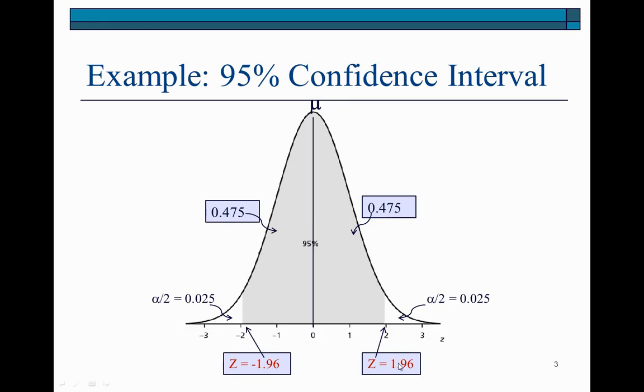So 1.96 is the z value corresponding to an area of 0.475. And that's what you find right here and right here. So these are going to be the z values with which to eventually calculate the lower limits on this left side and the upper limits on this right side of the confidence interval.